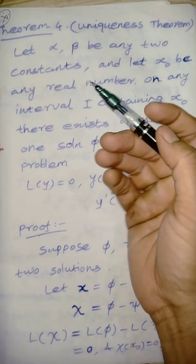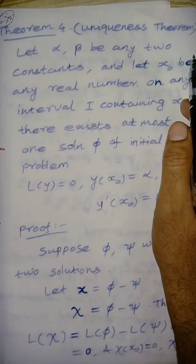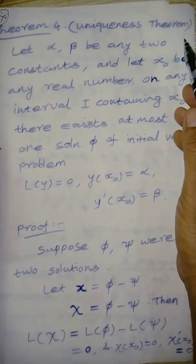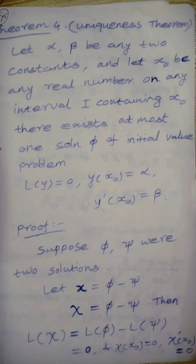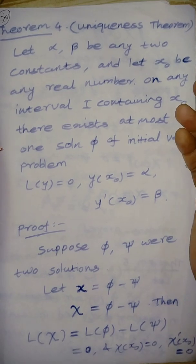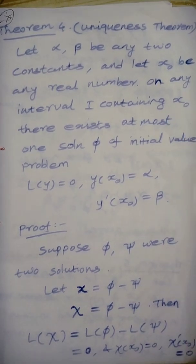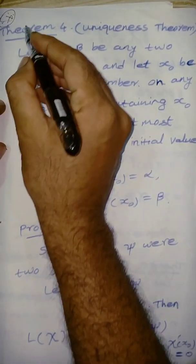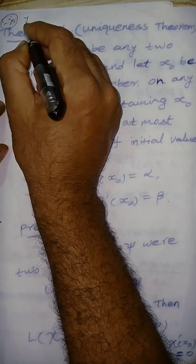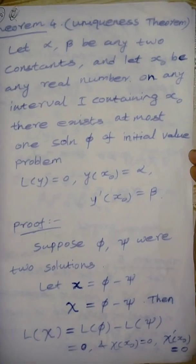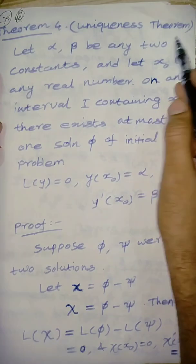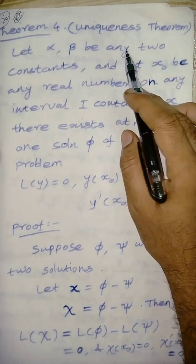Now, as a continuation, Theorem 4 is the uniqueness theorem. First the existence theorem, then the inequality — very important theorems from an exam point of view. Now, the uniqueness theorem.